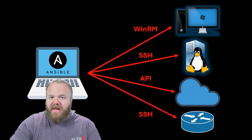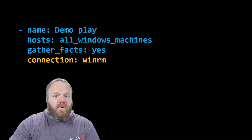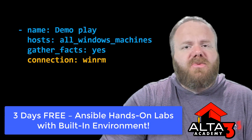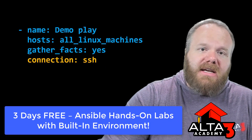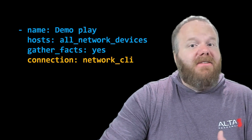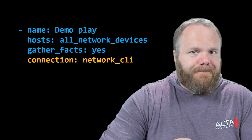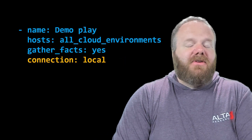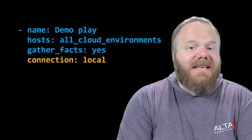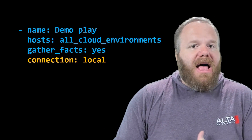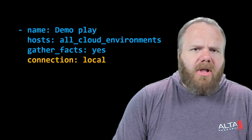Fortunately, you don't need to worry about that. All you need to do in your playbook is to make sure you're specifying the correct connection plugin. If your hosts are Windows machines, you would use WinRM. If you're talking to Linux, SSH. If you're talking to a network device — even though that's also an SSH connection — this uses something called network CLI. And if you're trying to reach a cloud environment, the connection type is local. If you're interested in seeing videos on how to make Ansible interact with cloud environments, drop a comment down below.